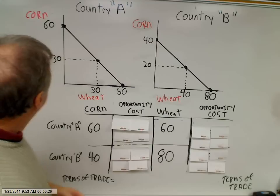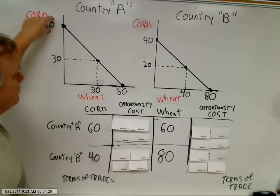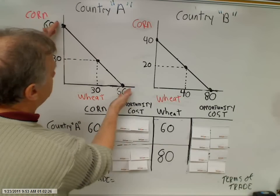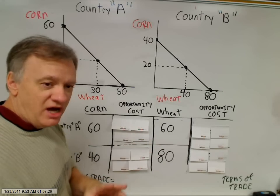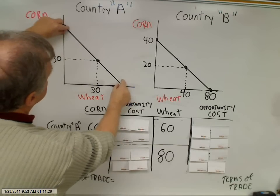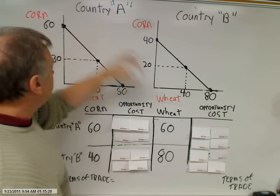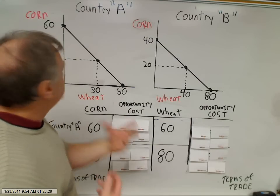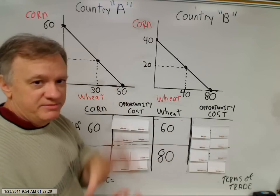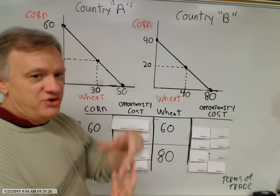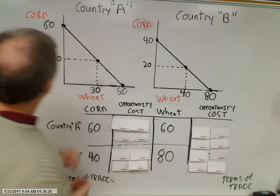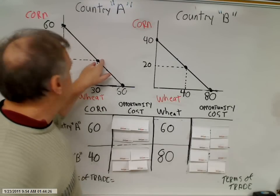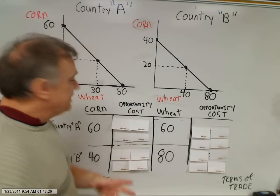Country A, given their resource endowment, if they allocate all their scarce resources to the production of corn, they can produce 60 bushels of corn. Or if they allocate all their scarce resources towards wheat, they can produce 60 bushels of wheat. Connecting those two extreme points gives us a straight-line, constant-cost production possibilities frontier. Let's assume they're not trading with anybody and are just producing for domestic consumption, splitting the difference to produce 30 bushels of corn and 30 bushels of wheat — productive and allocative efficiency.